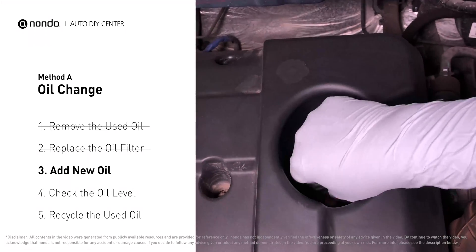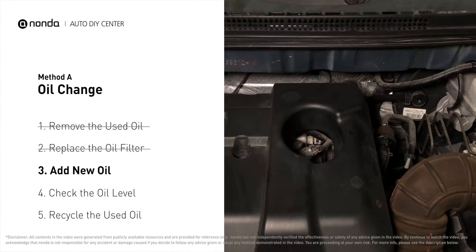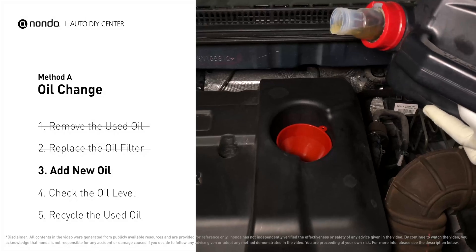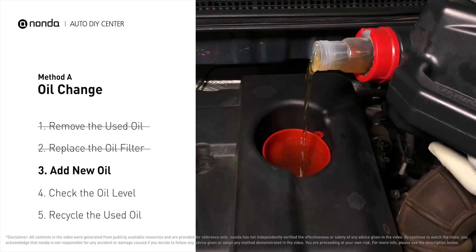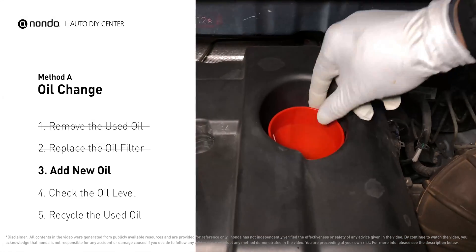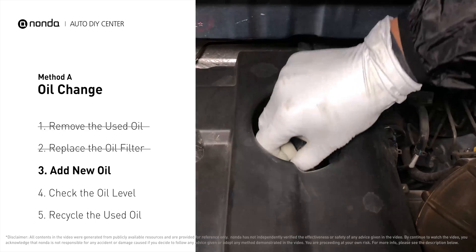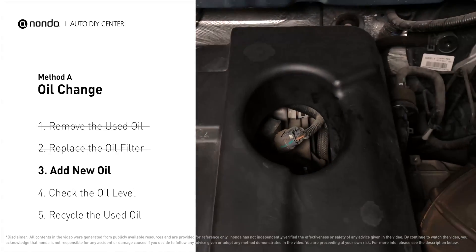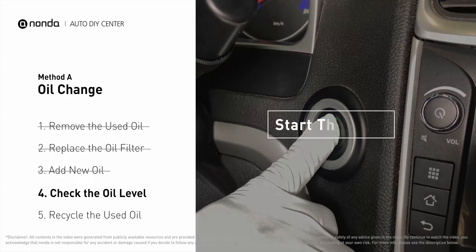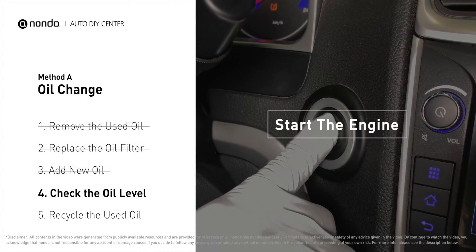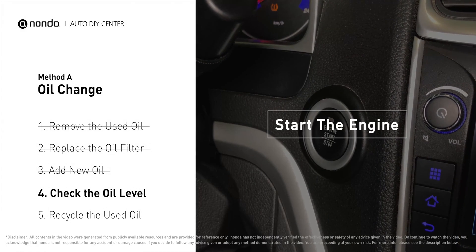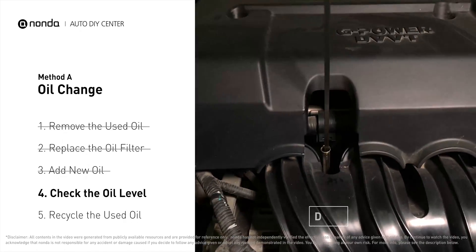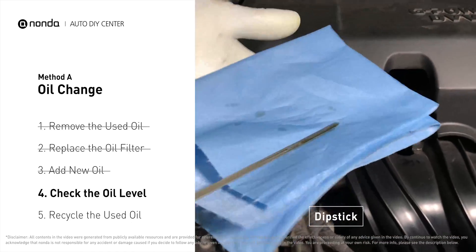To fill the vehicle with fresh oil, first locate your oil fill cap at the top of the engine. Take the cap off, place the funnel into the opening, and add the amount of oil specified in your owner's manual, then replace the cap. After the oil change, start the engine and let it run for a minute to bring your oil pressure up, then recheck your oil level. To check oil levels, pull the dipstick out and clean it off.